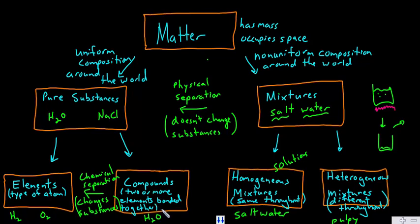Compounds are two or more elements bonded together with simple whole number ratios. Two hydrogens covalently bound to oxygen, or sometimes elements can be ionically bound to each other as well.